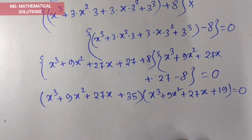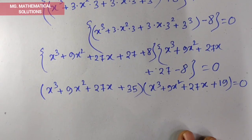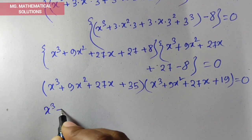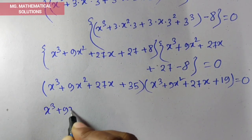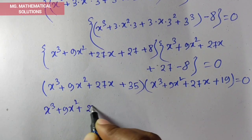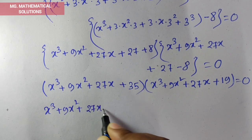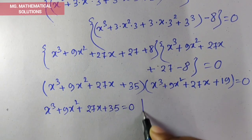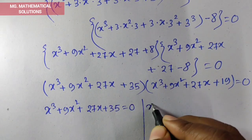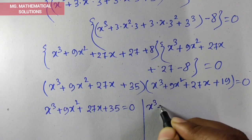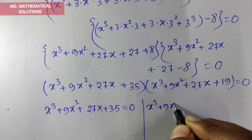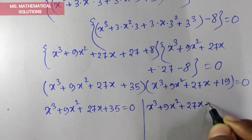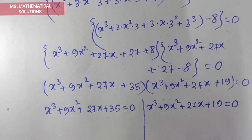Now we are getting 2 cases. Case 1: x³ + 9x² + 27x + 35 = 0. Or Case 2: x³ + 9x² + 27x + 19 = 0.